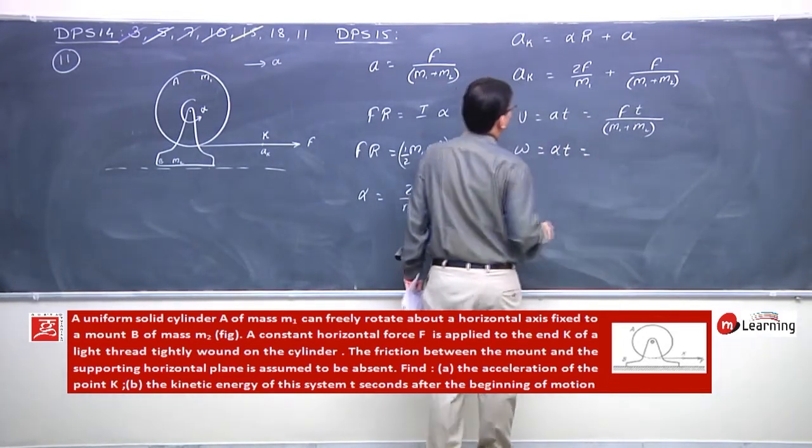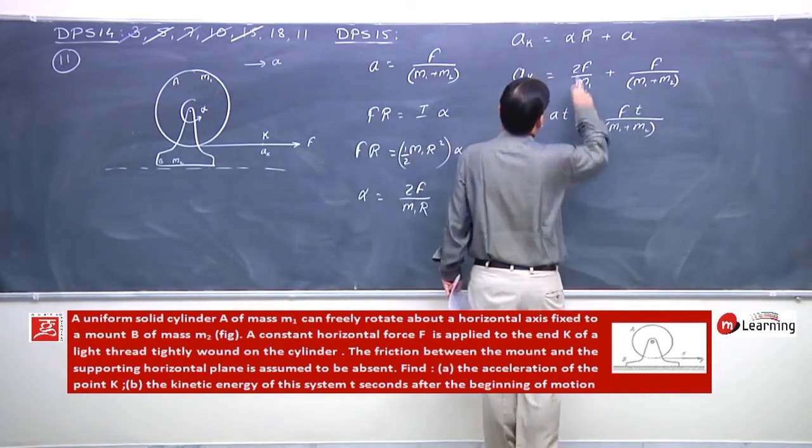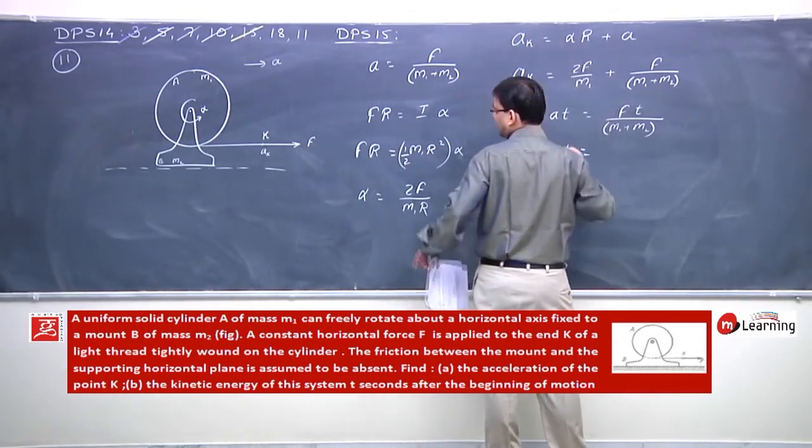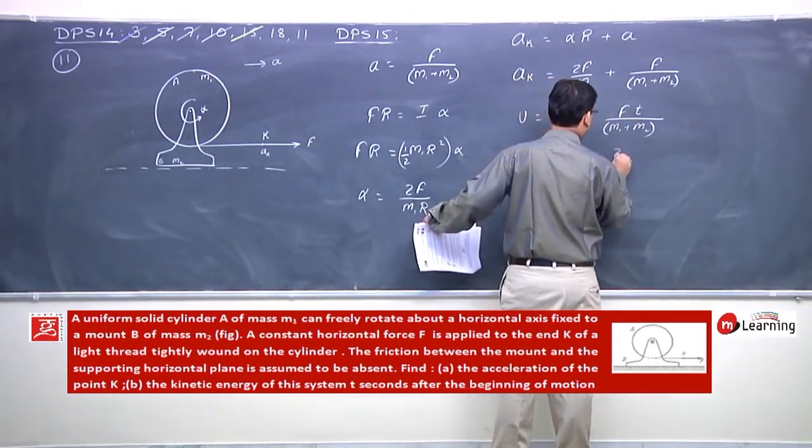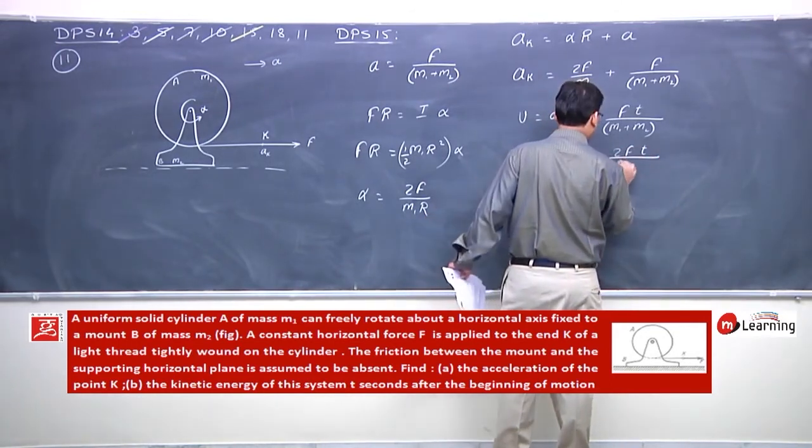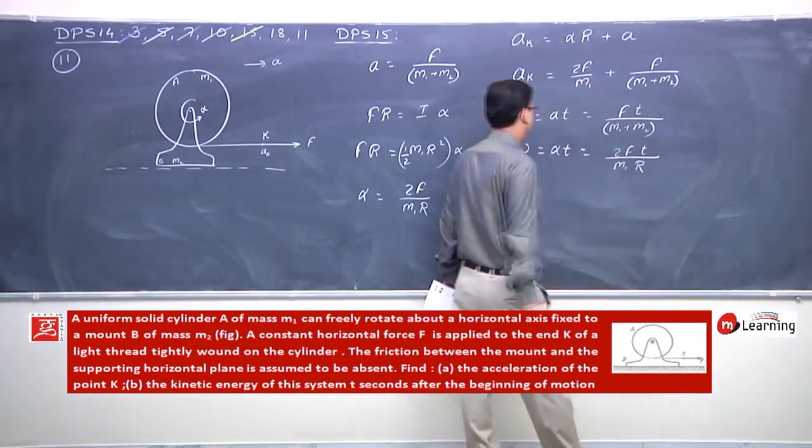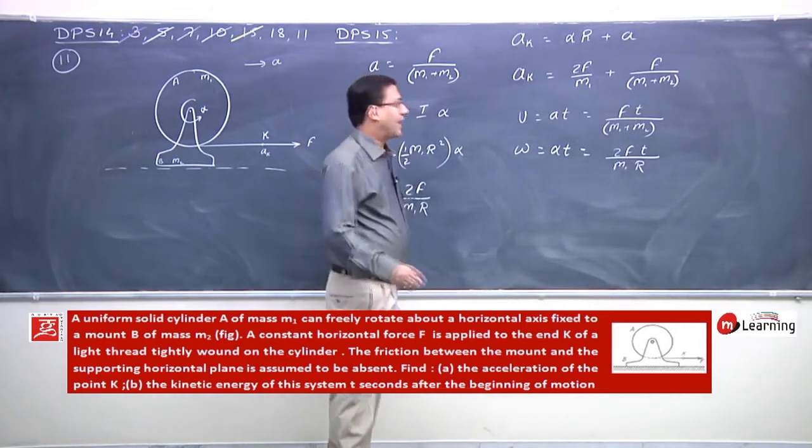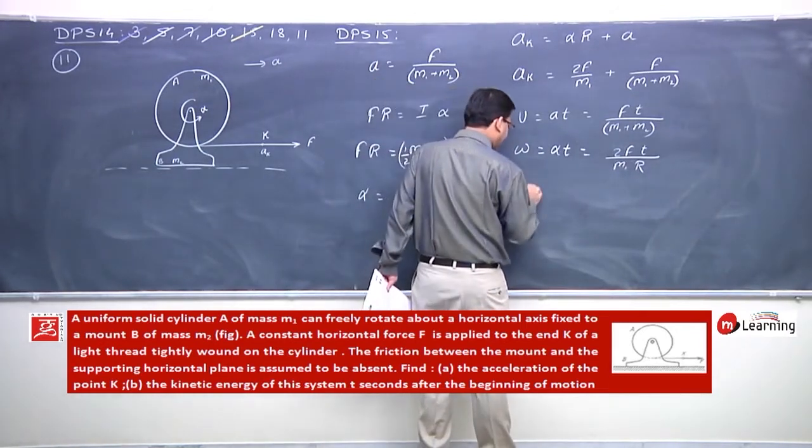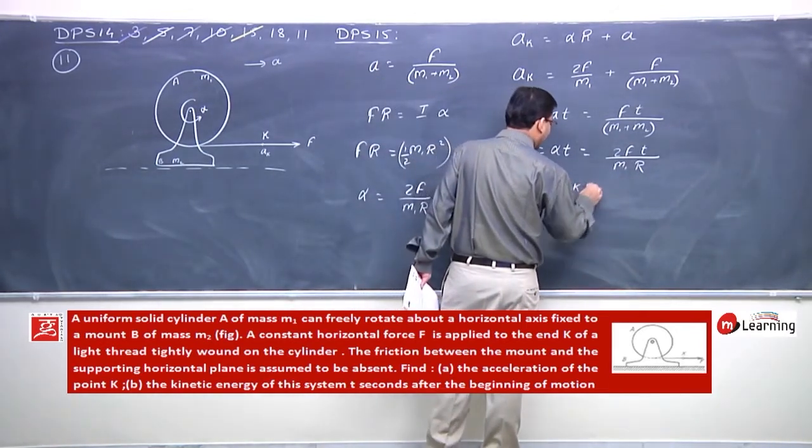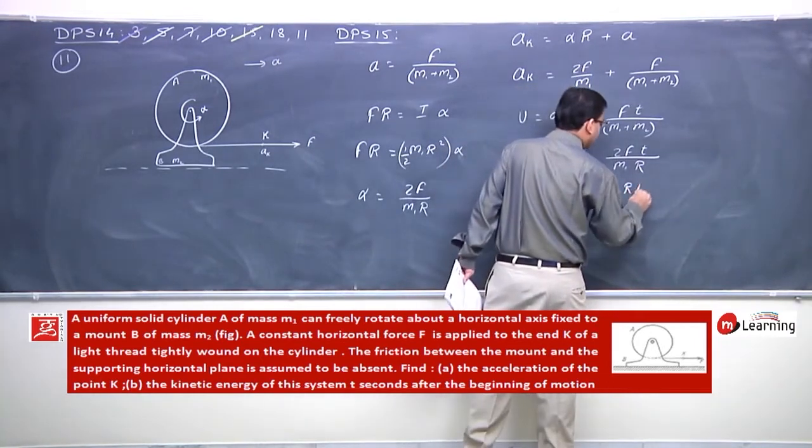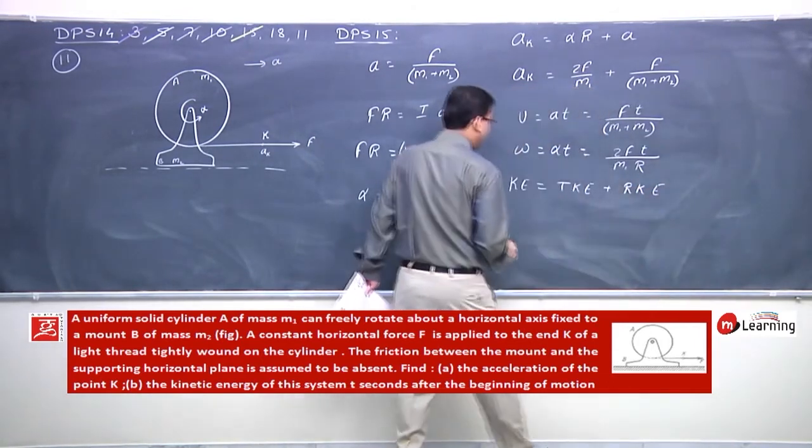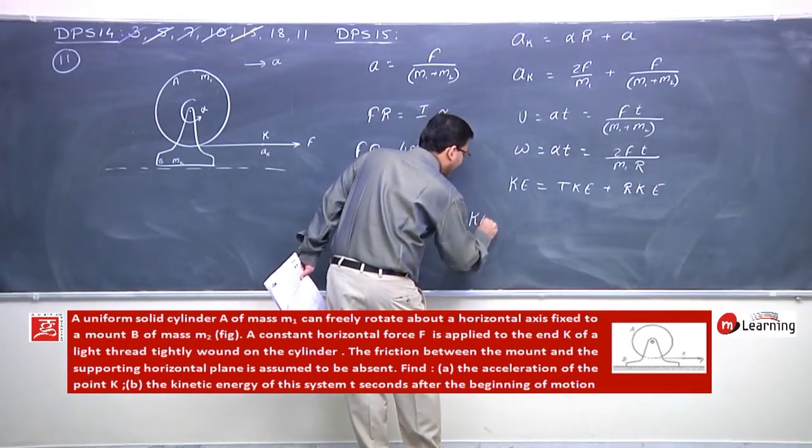Alpha equals 2F T by M1. Now kinetic energy of the system, that is translational kinetic energy plus rotational kinetic energy.